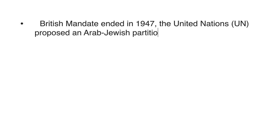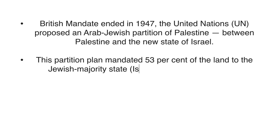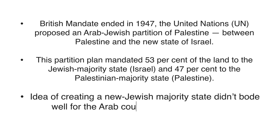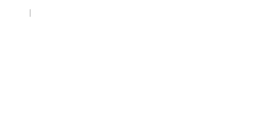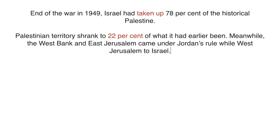At the end of World War Two, there was a strong demand from Jews fleeing Nazi Europe for a homeland within Palestine, which was an Arab-dominated region. Jerusalem is considered a holy place by Jews. After the end of the British Mandate in Palestine in 1947, the United Nations came with a plan to partition Palestine — 53 percent of the land was given to the Jewish majority state of Israel and 47 percent to the Palestinian majority state.